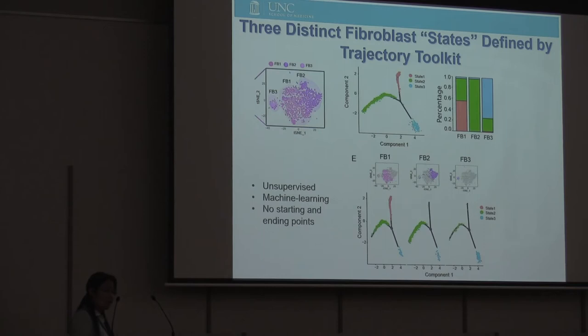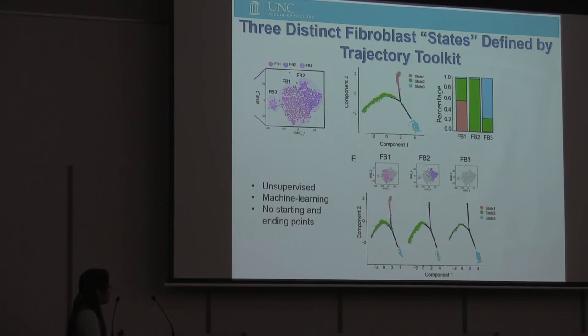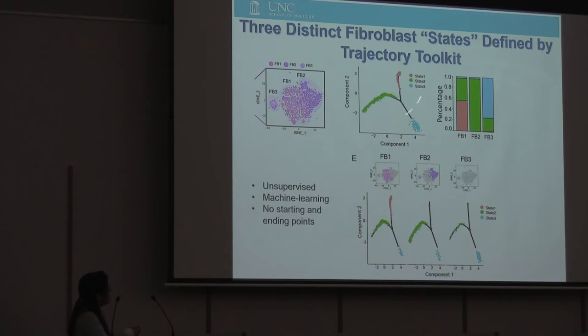Li Wang and Yuchen were quite creative — instead of using the traditional clustering method, they started to use trajectory toolkits and purely let the mathematical algorithm categorize the cells by themselves. This is completely unsupervised machine learning. They didn't define the starting or ending points on the trajectory. And they identified three branches — or states — within this trajectory.